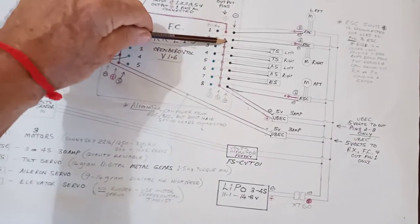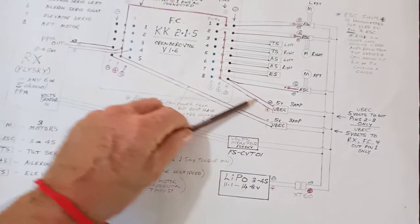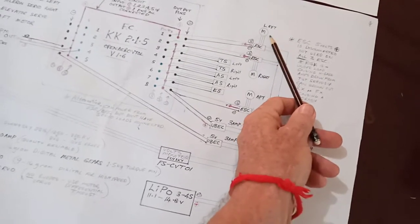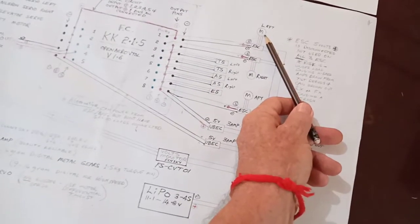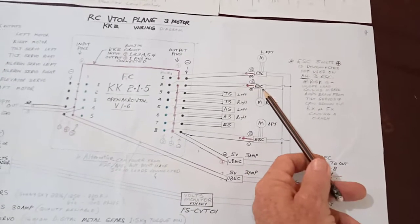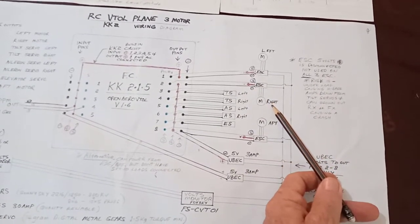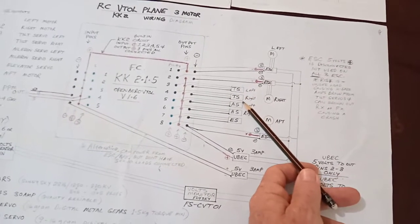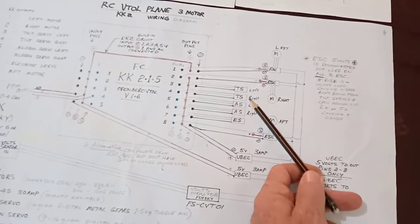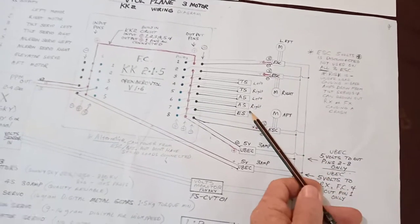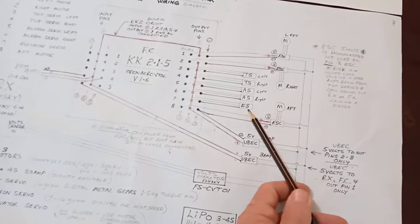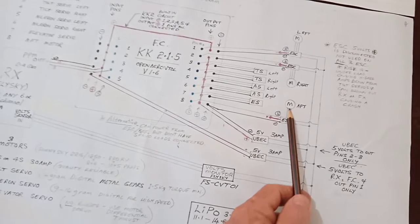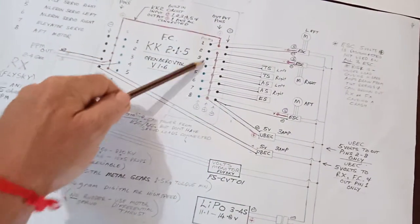Output one and from two to eight, that is not connected. So if you want to power any of these, it has to be on a separate UBEC. On output one I have the left motor. Output two, the right motor. Output three, the left tilt servo. The right tilt servo, the left aileron servo, the right aileron servo, the elevator servo, and the aft motor, the rear motor.